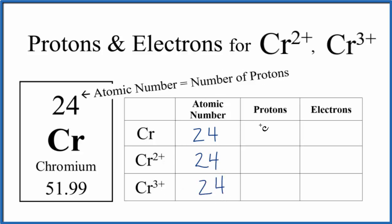And that will equal the number of protons. So again, for chromium and then for its ions, 24 protons.